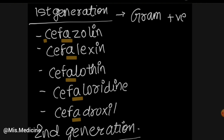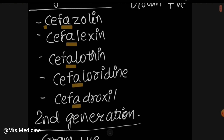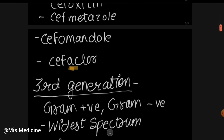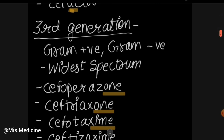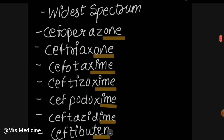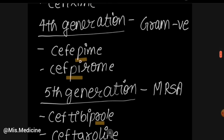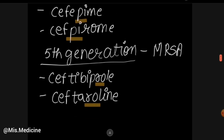In summary, this video discussed the five generations of Cephalosporins. First generation is specific for gram-positive bacteria. Second generation covers gram-positive, gram-negative, and anaerobes. Third generation is effective against gram-positive and gram-negative with the widest spectrum, with drug endings in -ime, -one, or -axime. Fourth generation is effective against gram-negative bacteria and includes 'pi' in drug names. Fifth generation targets MRSA and includes Ceftobiprole and Ceftaroline.